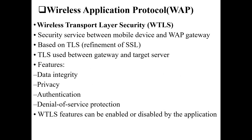WTLS is the security mechanism used between mobile devices and the WAP gateway. It is based on TLS (Transport Layer Security) and provides features including data integrity, privacy, authentication, and denial-of-service protection. Data integrity ensures data is not changed during transmission; privacy means only sender and receiver can access it; authentication identifies the origin; and denial-of-service protection prevents blocking attacks. These features can be enabled or disabled by the application as needed.